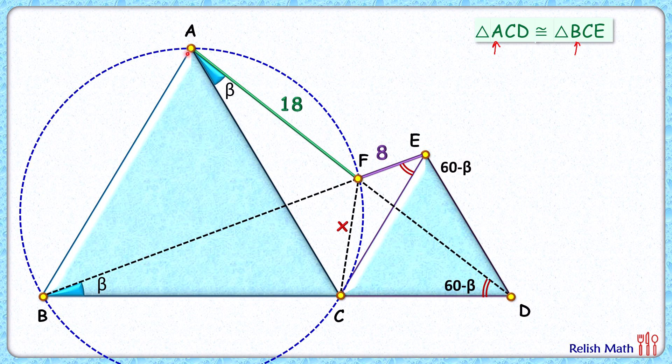And if you see ABCF, it's a cyclic quadrilateral, and angle F and angle B will be supplementary. B is 60, so angle F will be 120 degrees.